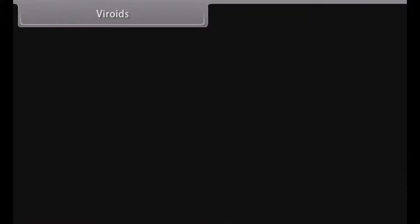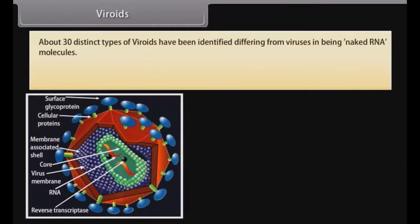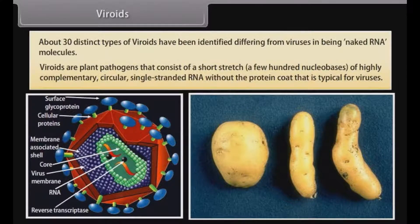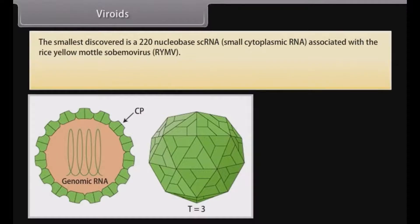About 30 distinct types of viroids have been identified. Differing from viruses in being naked RNA molecules, viroids are plant pathogens that consist of a short stretch — a few hundred nucleobases — of highly complementary, circular, single-stranded RNA without the protein coat that is typical for viruses. The smallest discovered is a 220-nucleobase scRNA, that is, small cytoplasmic RNA, associated with the rice yellow mottle sobemovirus (RYMV).